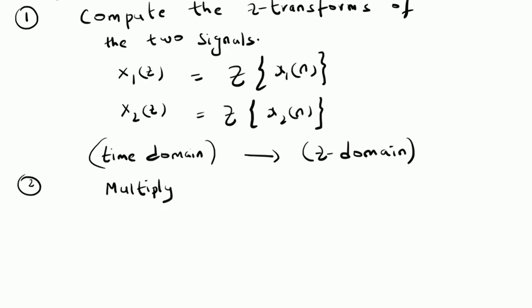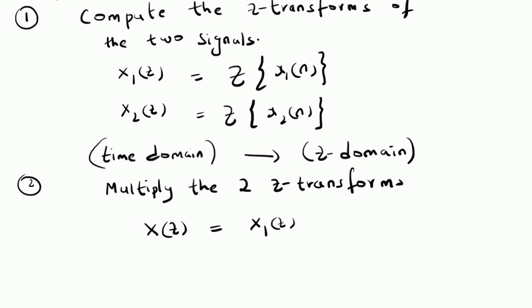The second step is to multiply the two Z-transforms. We define X(z) as X1(z) multiplied by X2(z). This is based on the convolution property of the Z-transform: convolution in the time domain is equivalent to multiplication in the Z-domain. This step is completely done in the Z-domain.